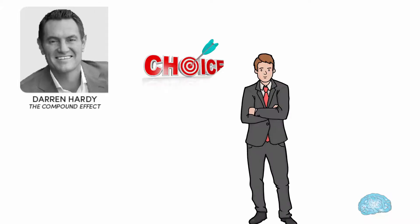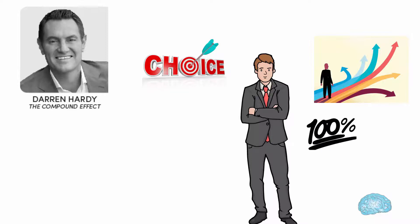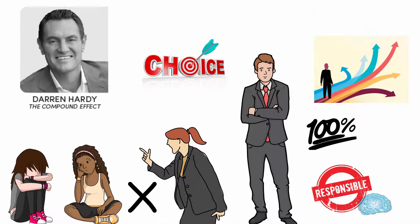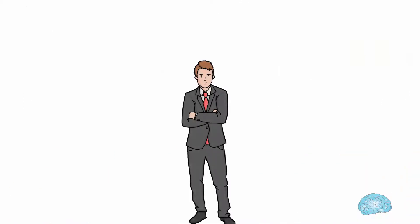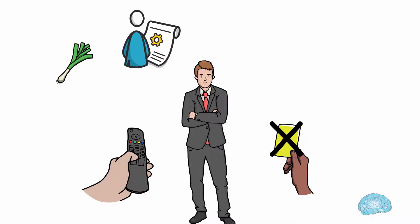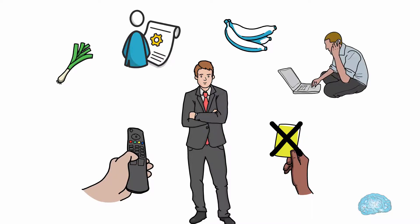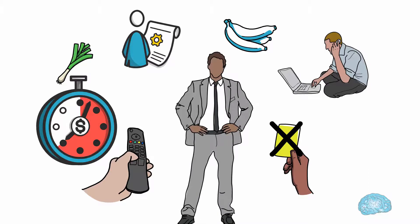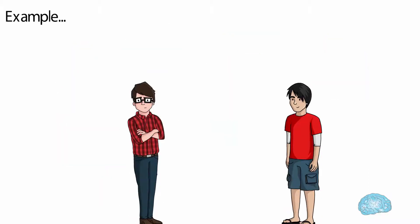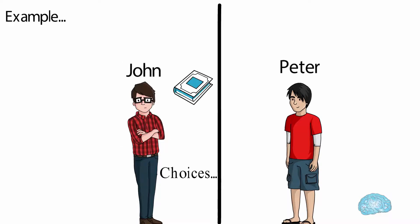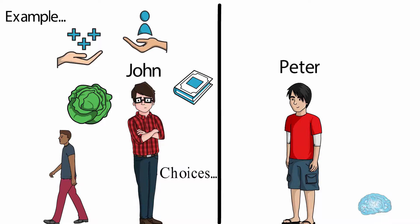Author Darren says whatever you are now is because of your choices and decisions. You need to own 100% of your responsibility instead of blaming someone else for your situation. You have complete control of your life in your hand, not others. The small choices you make every day will create a huge impact in the long run. For example, consider two people: John and Peter.